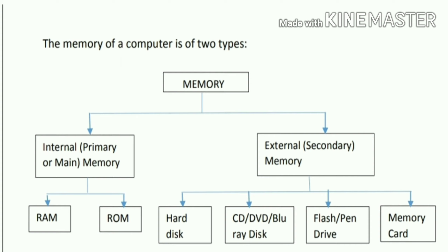Coming to the broad description of the types of memory: in a computer we have two main segments of memory. Internal memory, which is also known as primary memory or the main memory, and external memory, which is the secondary memory. In internal or primary memory, it is a memory which is already stored in the computer — we call it RAM, random access memory, or ROM.